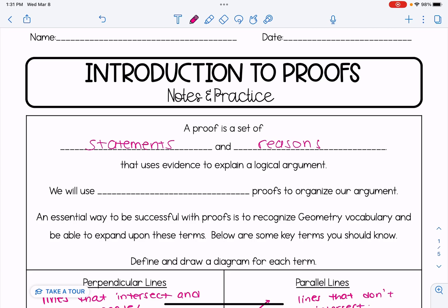We will use two-column proofs to organize our argument. There are different ways to organize proofs in geometry, but the way we're going to feature in this video is called the two-column proof. The left column of our proof is going to be called the statement column, and the right column is the reason column.